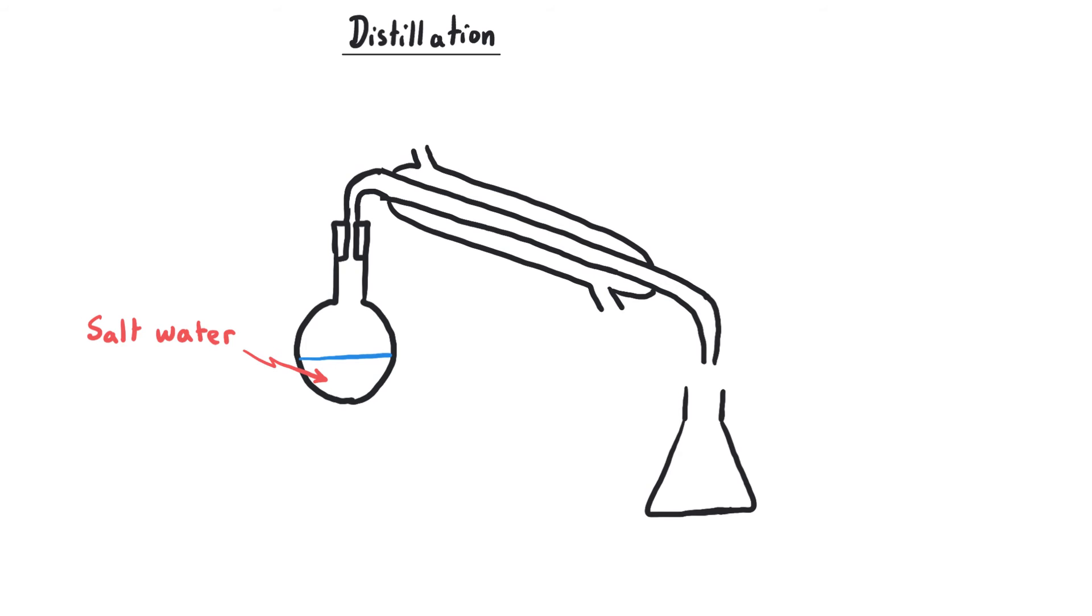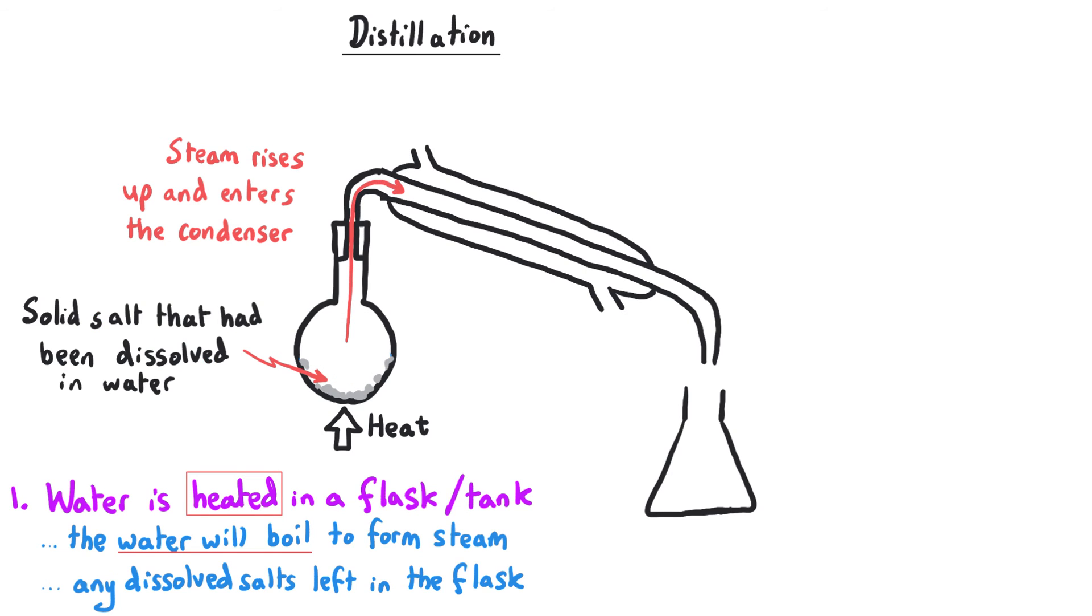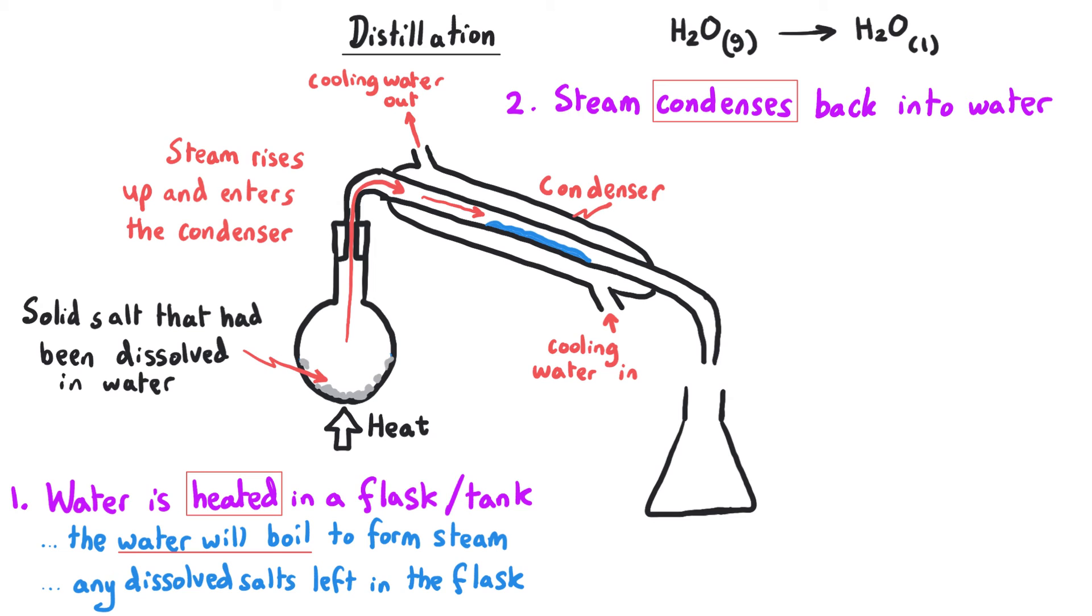The process of distillation can be used to remove salt from sea water and produce drinkable water. This involves firstly heating the water in a flask or tank, depending on the scale. The water will boil and steam will form, rising up and out of the flask, leaving behind dissolved salts as a solid. The steam moves through the distillation apparatus and condenses back into water as it cools down. The liquid water forms in the condenser and dribbles down into the collecting vessel at the other end.